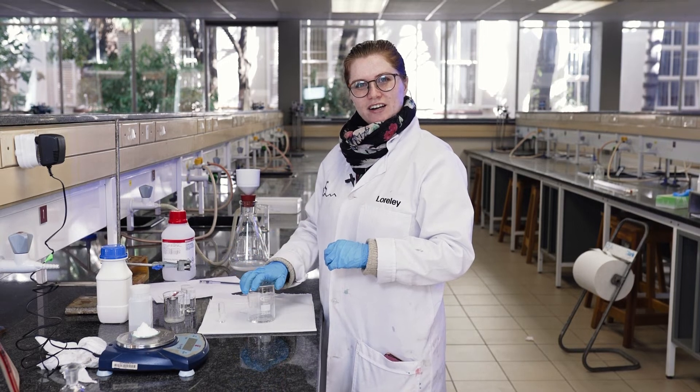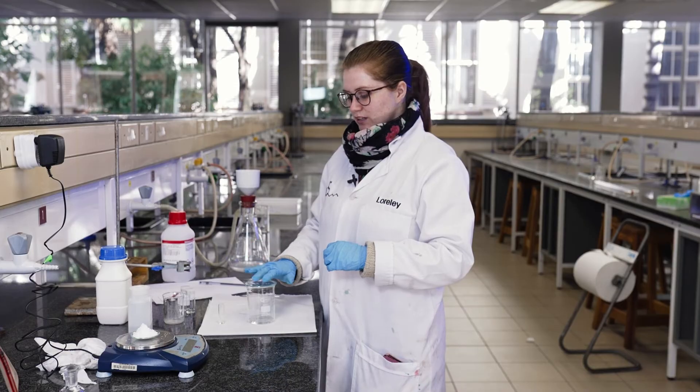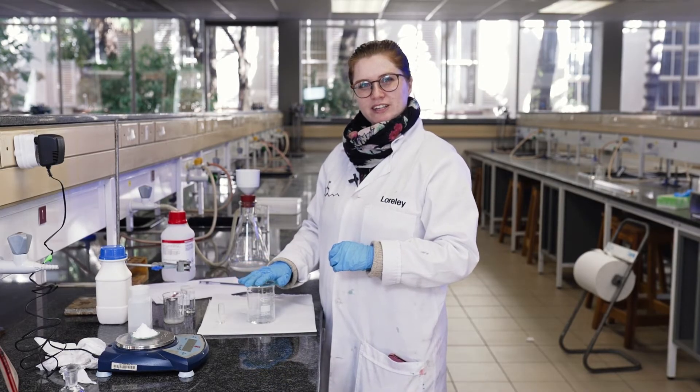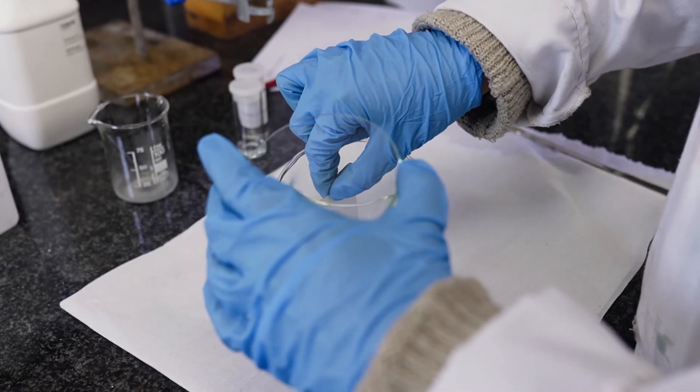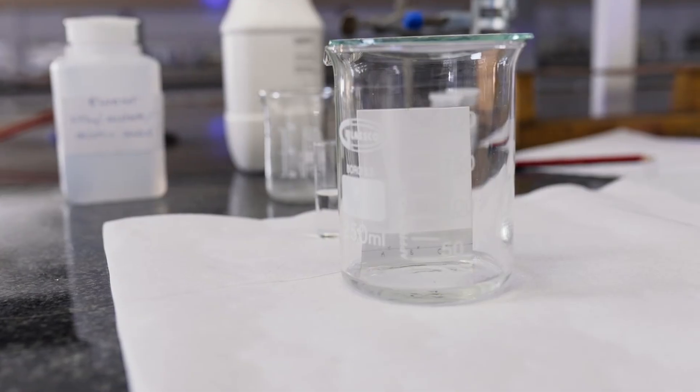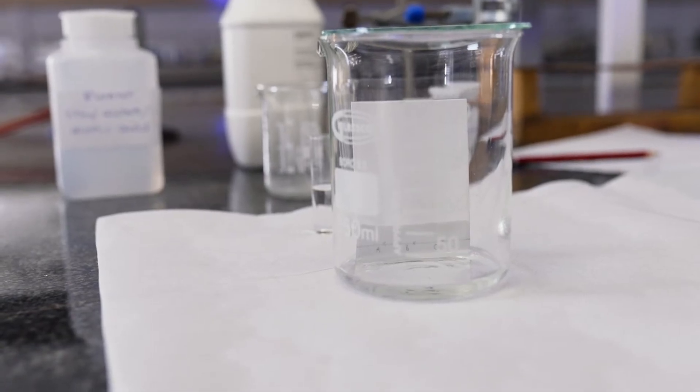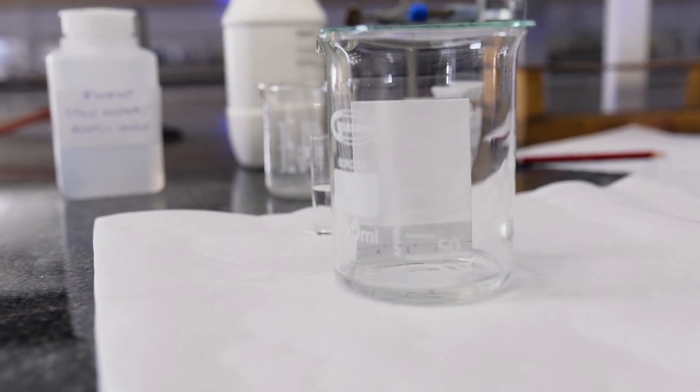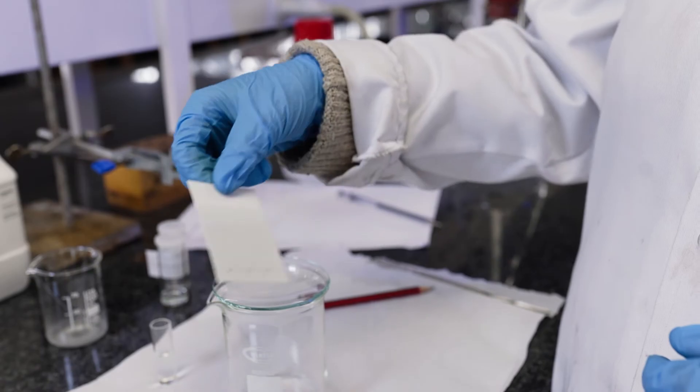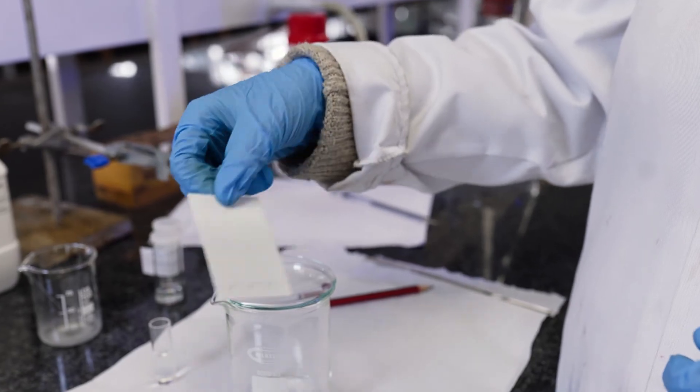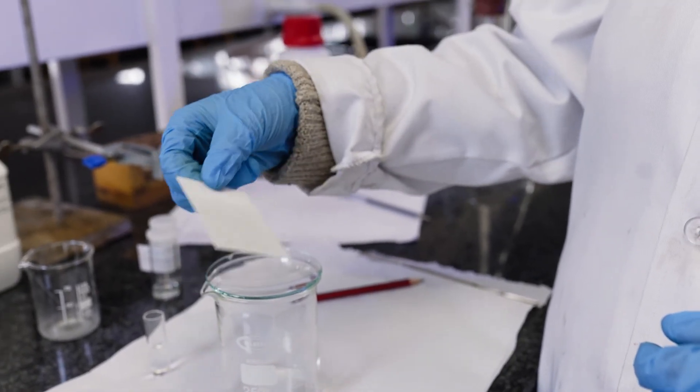So now we need to start running our TLC plate, but before we can do that we need to make sure that the beaker with our eluent is fully saturated. Okay, so now we need to make sure that the TLC plate is dry before we have a look at it under the UV light again.